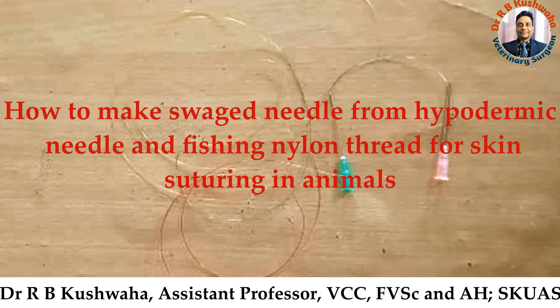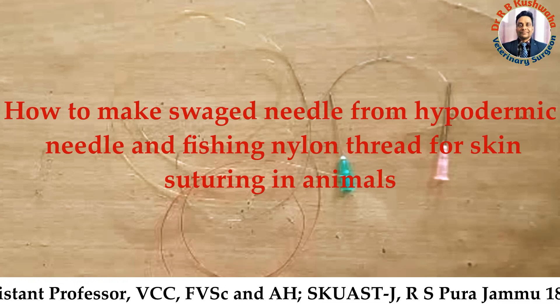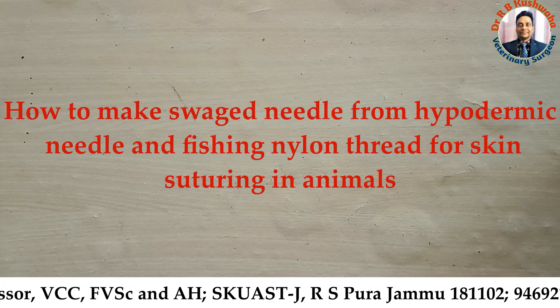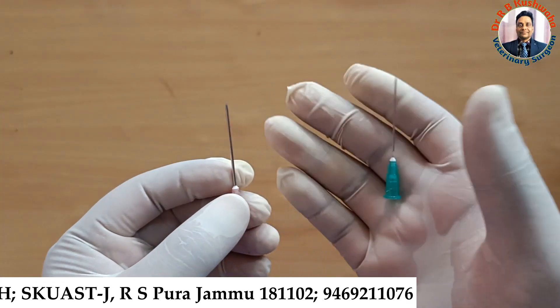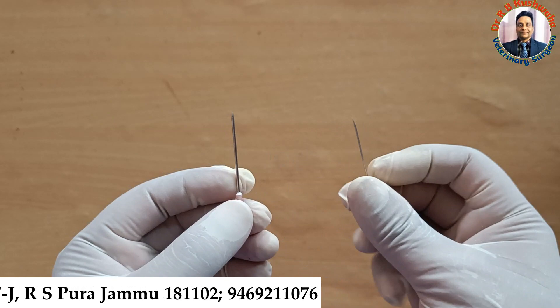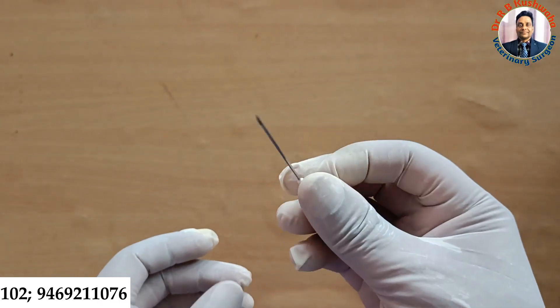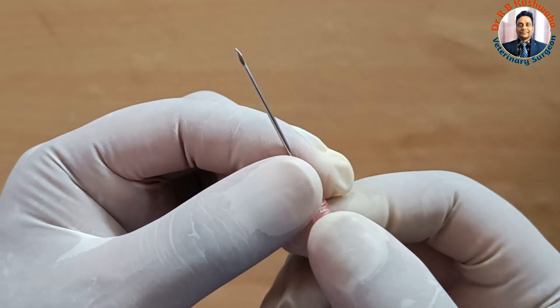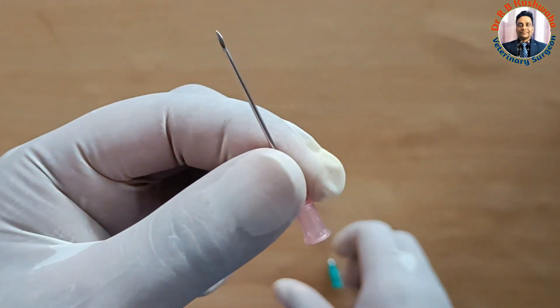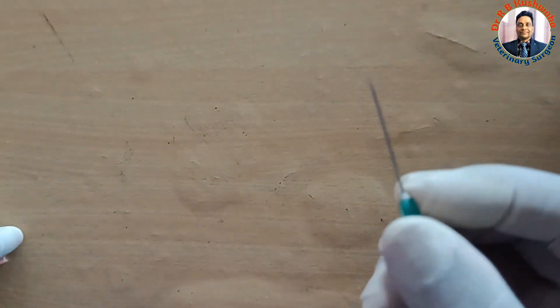To make a swaged needle for skin suturing we need a hypodermic needle. As per the thickness of the skin you can choose the hypodermic needle. This one is 21 gauge hypodermic needle and this is the 18 gauge hypodermic needle. This 18 gauge we normally use for the suturing of the cattle and buffalo skin.